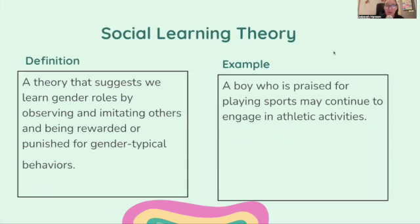Social learning theory: a theory that suggests we learn gender roles by observing and imitating others, and being rewarded or punished for gender-typical behaviors. For example, a boy who is praised for playing sports may continue to engage in athletic activities.